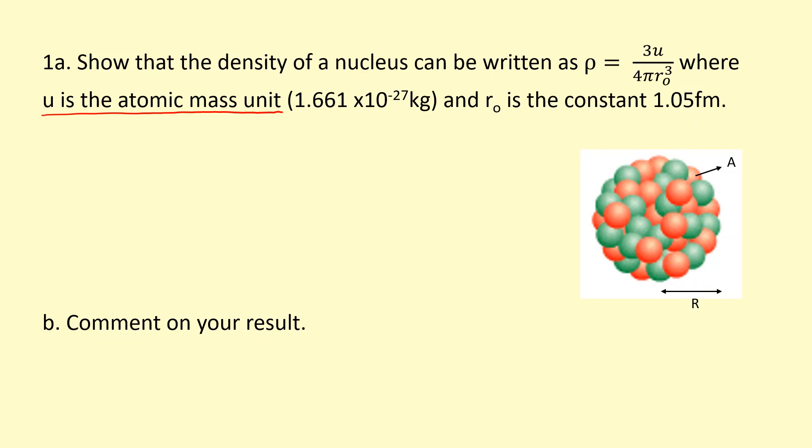We're going to try and find the density. Density is mass over volume. How do we get the mass? Mass is going to be the nucleon number, which is the number of protons and neutrons, A, times the average mass of the nucleons, which is the atomic mass unit.